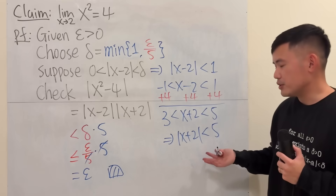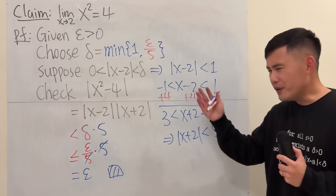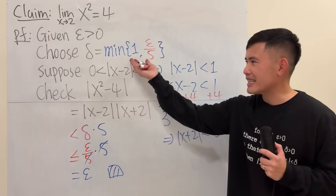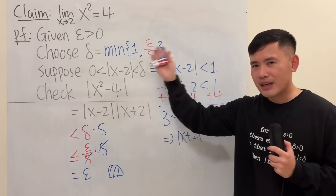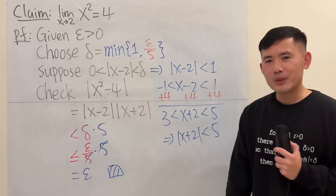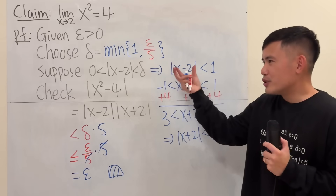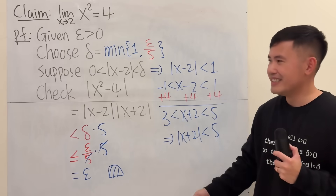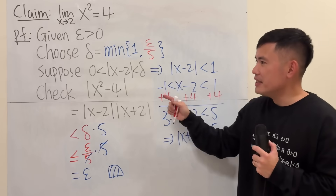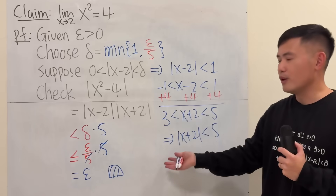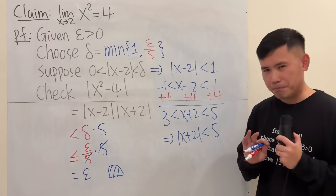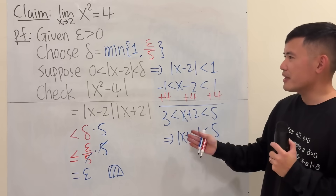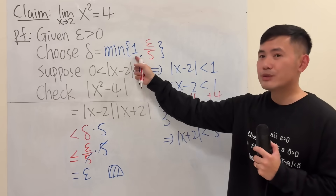But I'll tell you this: this is the nature of writing a math proof. Sometimes, as long as the proof works, it works. This step definitely makes the proof work, so just follow along — if you write something like this, it's perfect. But the main part today is that I'm going to show you how to do this kind of thing without the minimum of 1. So let's have a look.